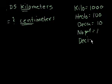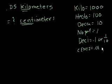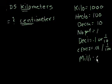Deci is equal to 0.1, or 1 tenth. Centi is equal to 0.01, or 1 over 100. And then milli is equal to 0.001, and that's the same thing as 1 over 1,000.